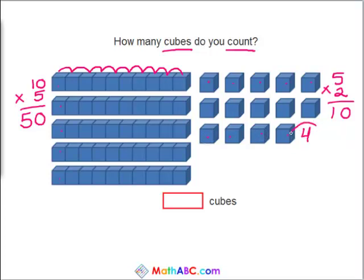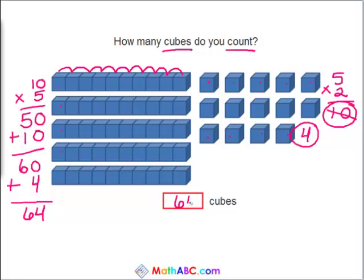Now let's add up all these numbers. 50 plus 10 is 60 plus 4 more equals 64. There are 64 cubes in total.